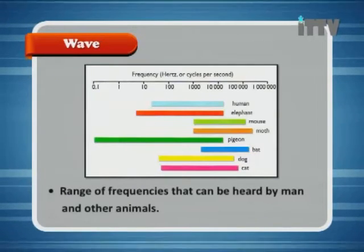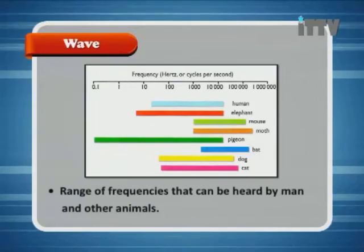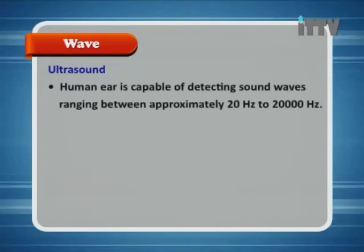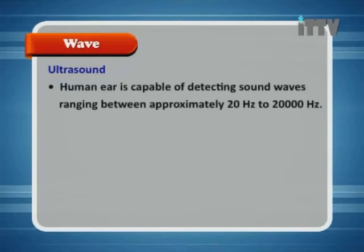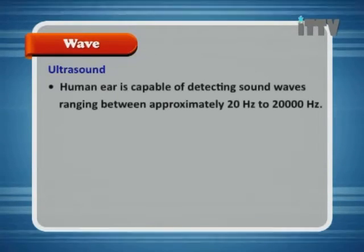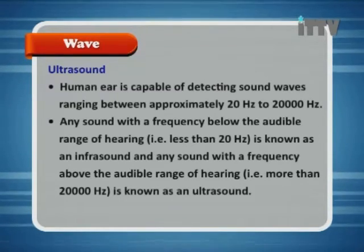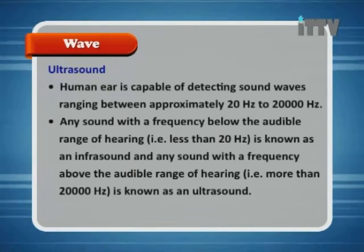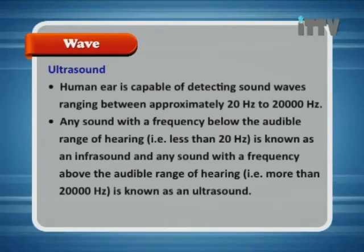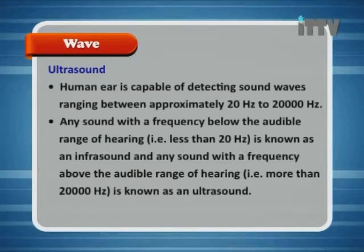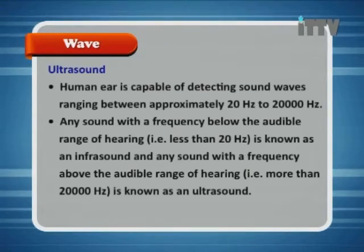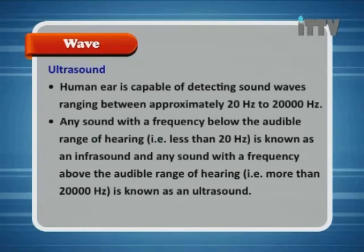The human ear is capable of detecting sound waves ranging between approximately 20 hertz to 20,000 hertz. Any sound with a frequency below the audible range — less than 20 hertz — is known as infrasound. Any sound with a frequency above the audible range — more than 20,000 hertz — is known as ultrasound.